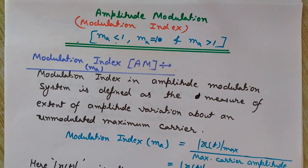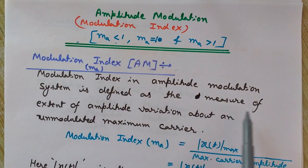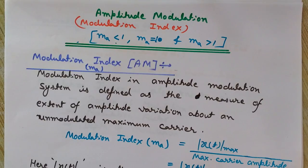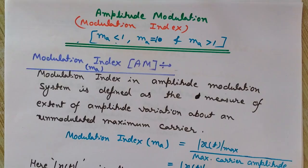Now we will see what the modulation index in amplitude modulation is. The modulation index in an amplitude modulation system is defined as the measure of extent of amplitude variation about an unmodulated maximum carrier. Since in AM we vary the amplitude of the carrier wave as per the instantaneous value of the modulating signal — also known as the message signal or baseband signal — the modulation index is the extent of how much we vary the amplitude about the unmodulated maximum carrier wave.